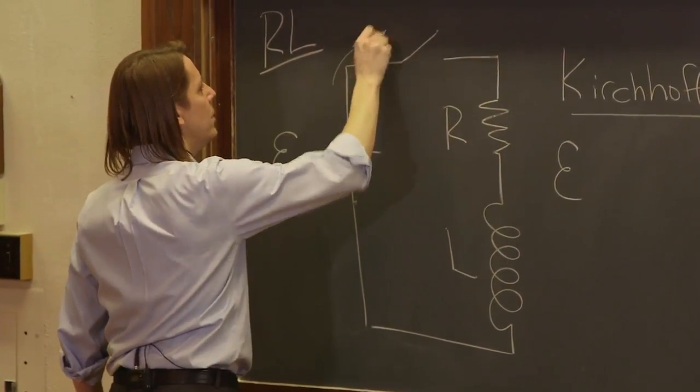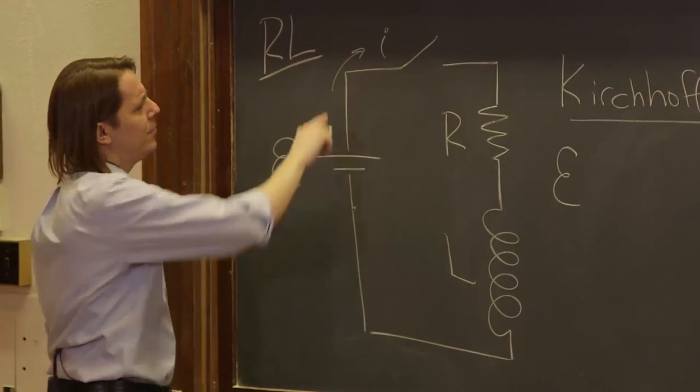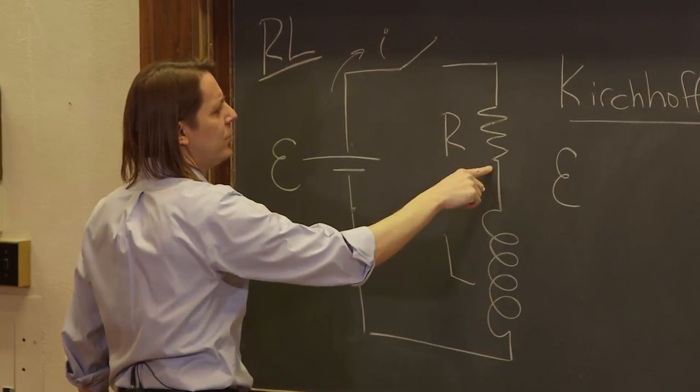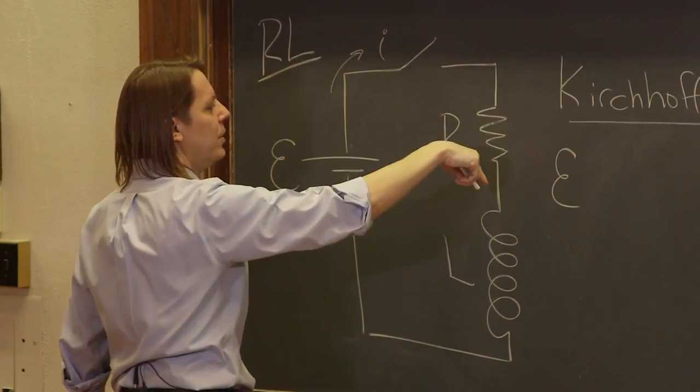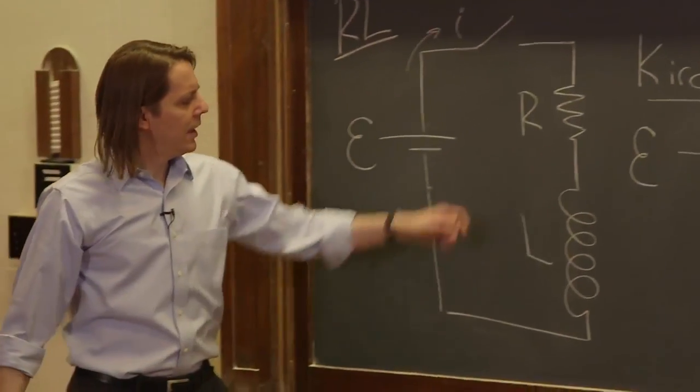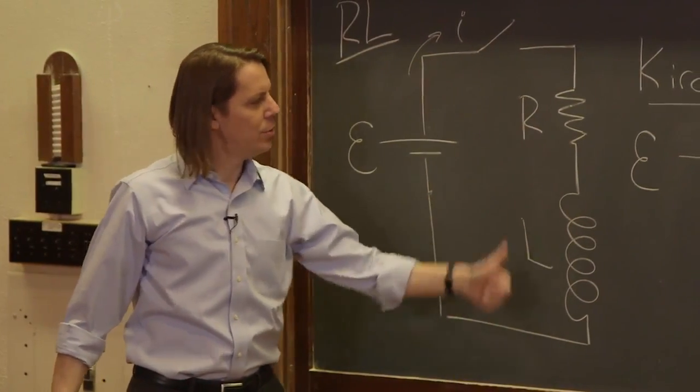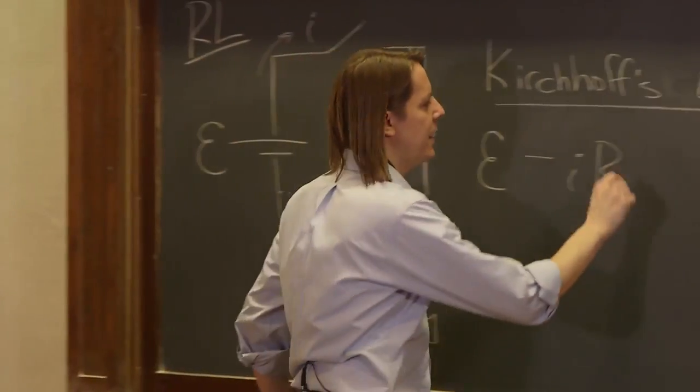And then we can assume the current's going to go that way, we're looping that way. And that means this would be the high side of the resistor and the low side if the current flows that way, so it's minus IR. And then we know this is going to be a back EMF, so we would say minus L di dt.